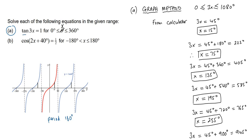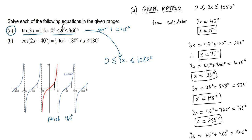We've got tan 3x equals 1. The first thing you do is find tan⁻¹ of 1, which is 45 degrees. Now, what you have to be careful about here is the range they've given you for x — there was a mistake in this question, they've put theta instead of x. You need to find the range for 3x. Because the range is given in terms of x, you times both sides of the inequality by 3, which gives 0 to 1080. That's really important.